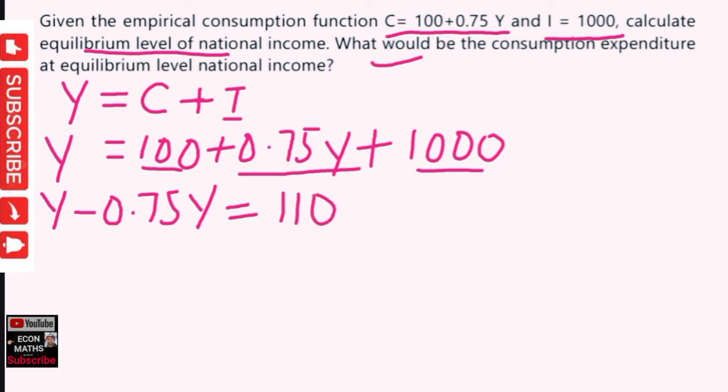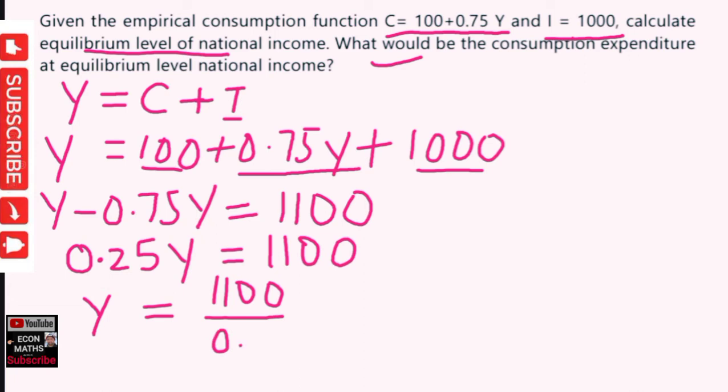Y minus 0.75Y is equal to 0.25Y, which is equal to 1100. Or we can write Y = 1100 / 0.25.